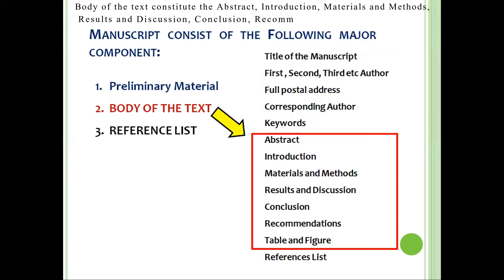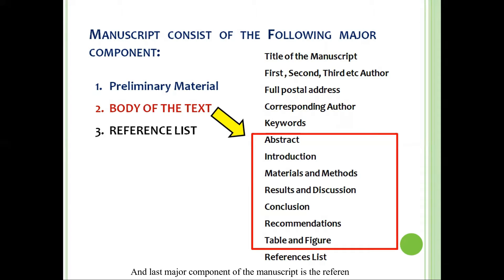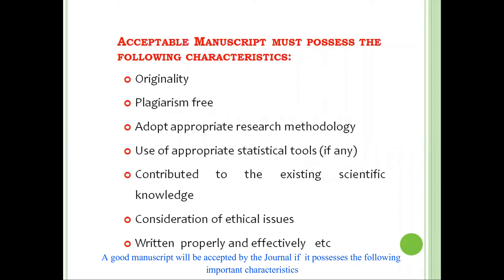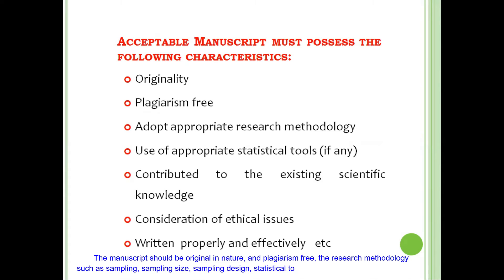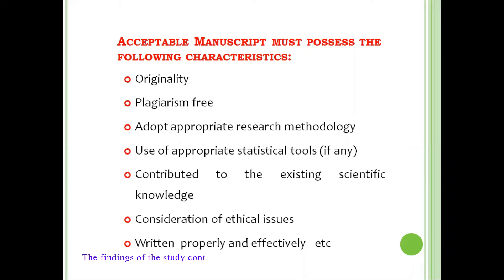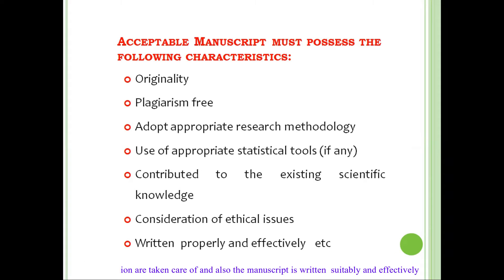The body of the text consists of the abstract, the introduction, materials and methods, results and discussion, conclusion, recommendation, tables, and figures. The last major component of the manuscript is the reference list. A good manuscript will be accepted by the journal if it is original and plagiarism-free, the research methodology such as sampling, sample size, and sampling design and statistical tools used are correct, the findings contribute to existing scientific knowledge, ethical considerations are taken care of, and the manuscript is written properly and effectively.